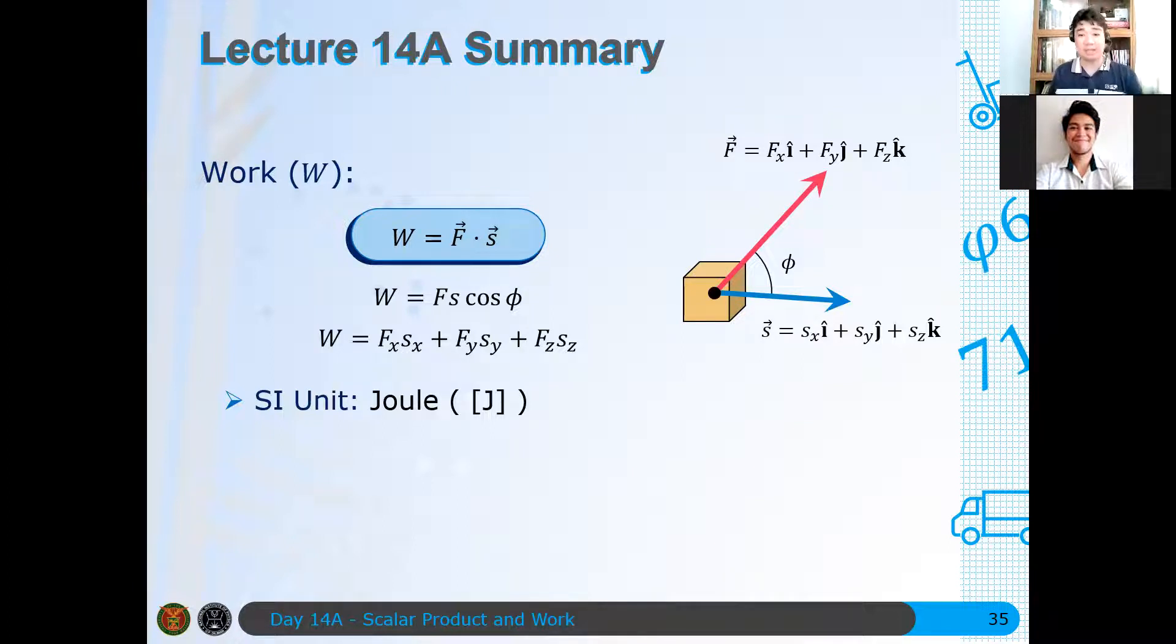And in unit vector notation, it is just pagsamasamahin mo yung x component, multiply mo yung dalawang y component, multiply mo yung dalawang z component, and then you add them. That is, by adding them, you get the total work done of this particular force. And then the SI unit for this, for work, is Joules.